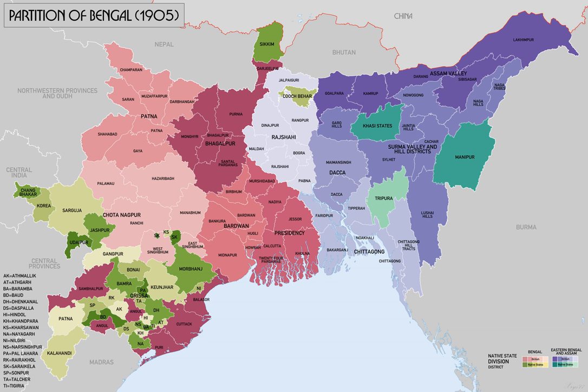Due to these political protests, the two parts of Bengal were reunited on 12 December 1911. A new partition which divided the province on linguistic rather than religious grounds followed, with the Hindi, Oriya and Assamese areas separated to form separate administrative units. Bihar and Orissa province was created to the west, and Assam province to the east. The administrative capital of British India was also moved from Calcutta to New Delhi.